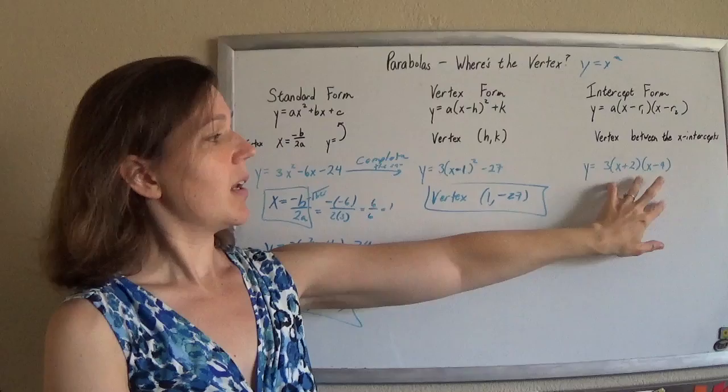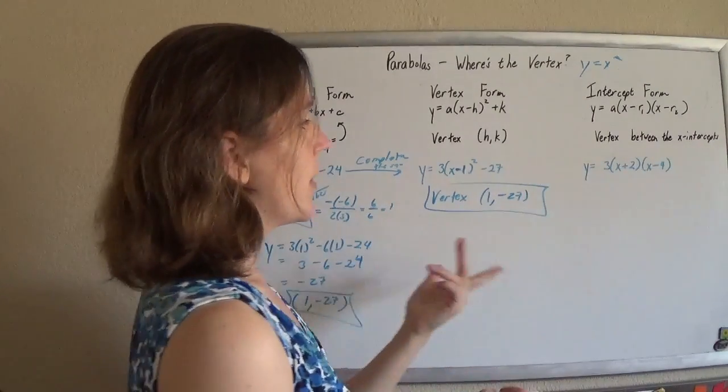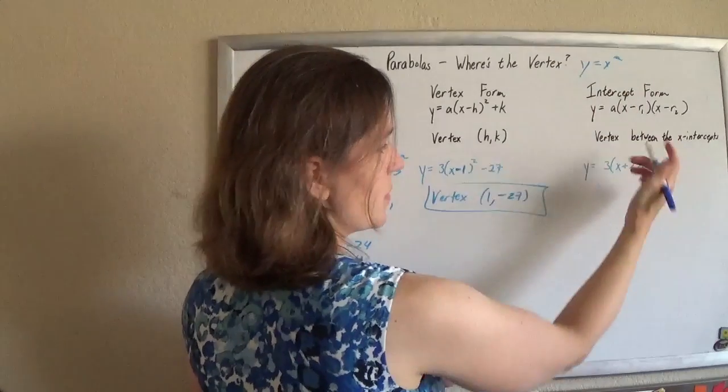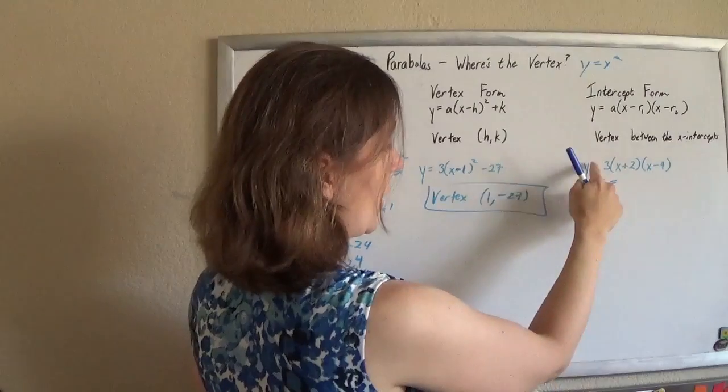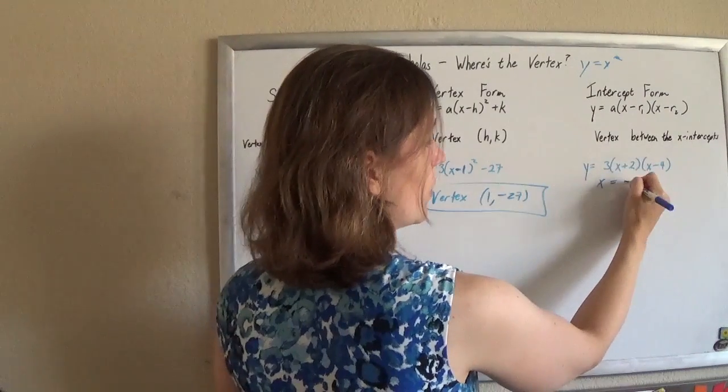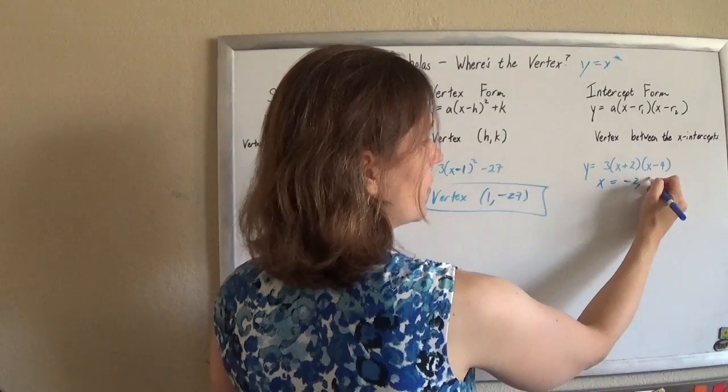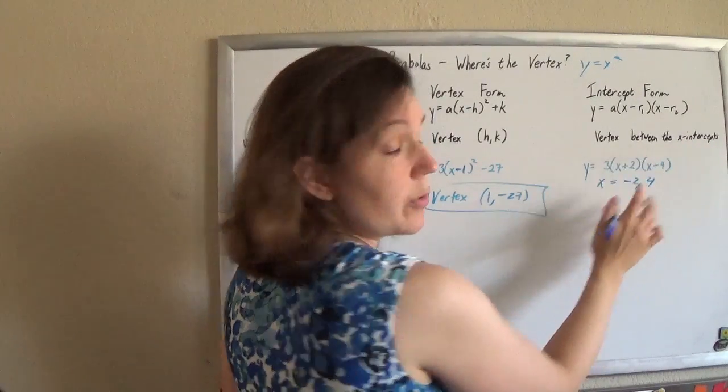If you have it in an intercept form, in this factored form, this is called the intercept form because you can get your x-intercepts right out of it. When y is 0, the x's that are going to make that y a 0 are negative 2 and positive 4. When x is negative 2, this will be 0. When x is positive 4, that will be 0.